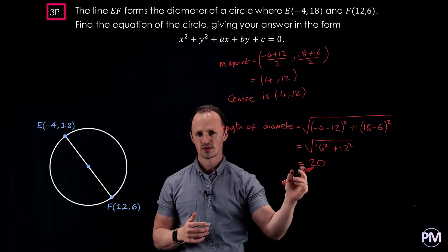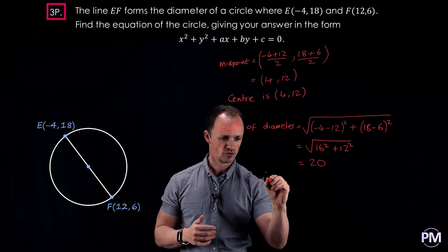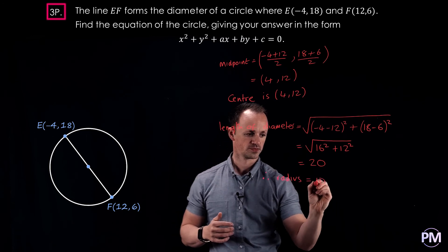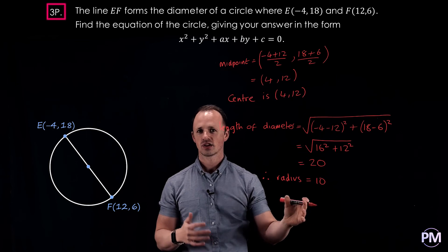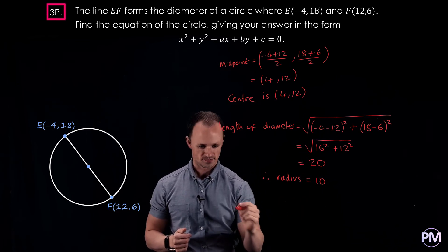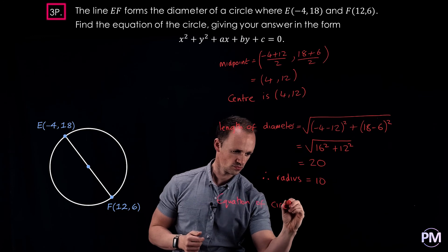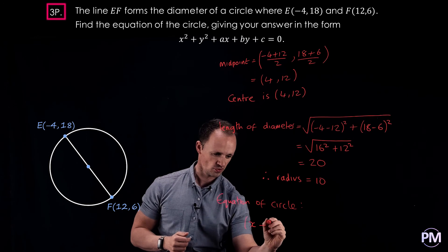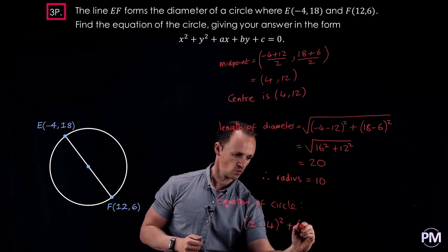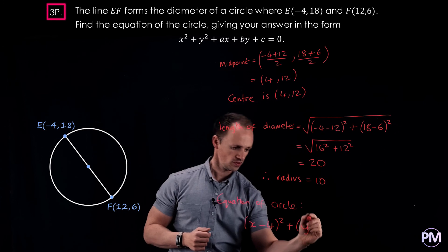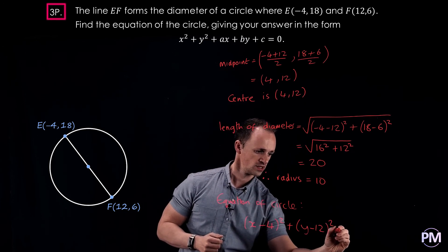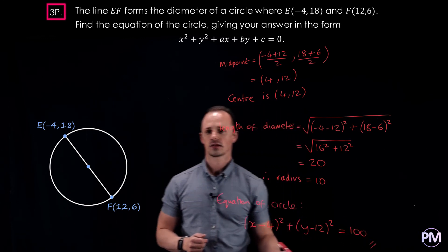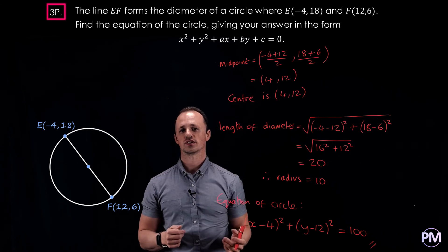Now we know the diameter is 20, so the radius is 10. With the centre and radius known, we can write down the equation of the circle: x minus 4, all squared, plus y minus 12, all squared, equals the radius squared, which is 100. So there's the equation of a circle that goes through these two points.